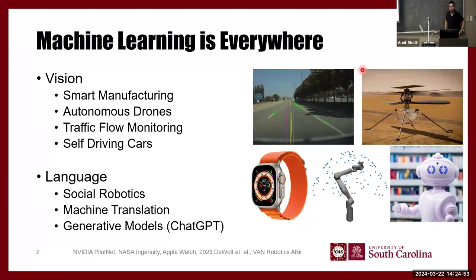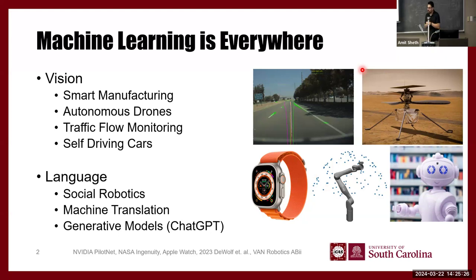I don't think there's anyone in this room who doesn't know how ubiquitous machine learning is. A lot of you use it or research it, and if nothing else, you've seen in media that things can get out of control. AI is a broad domain — I'm going to talk about two subdomains: computer vision and language models. I'll go over work we've done and papers we've published in these areas.